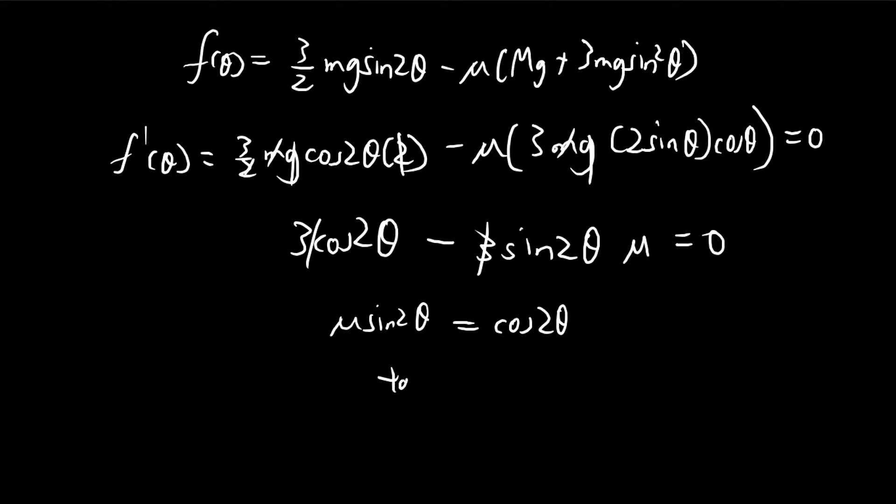I can arrange the terms like this. And then if I divide the cosine over, it becomes tangent 2 theta. And I divide the mu over to the other side, this becomes 1 over mu. So the required theta that we need is such that tangent 2 theta is equal to 1 over mu.